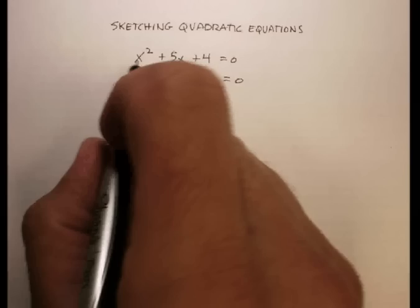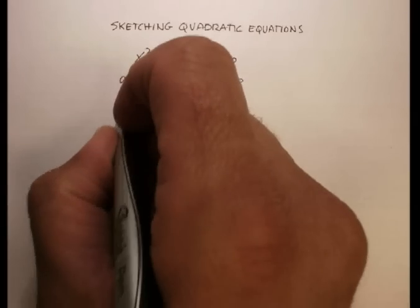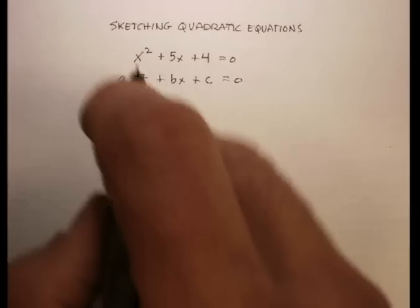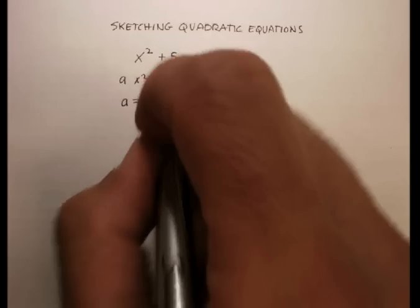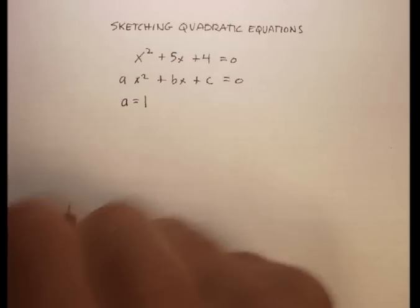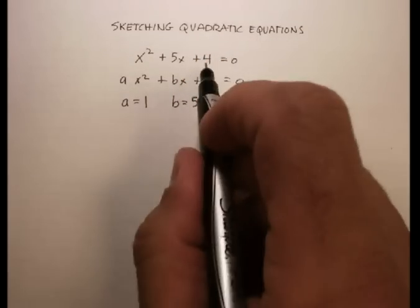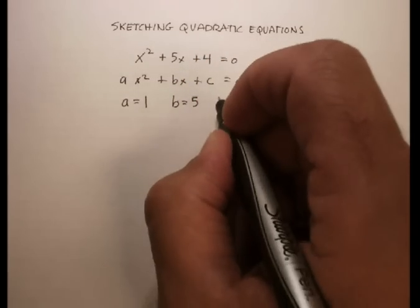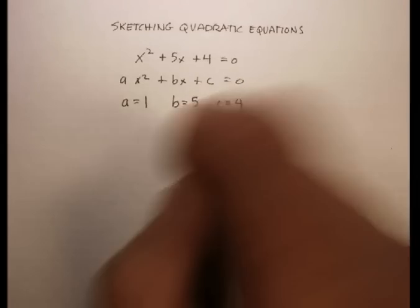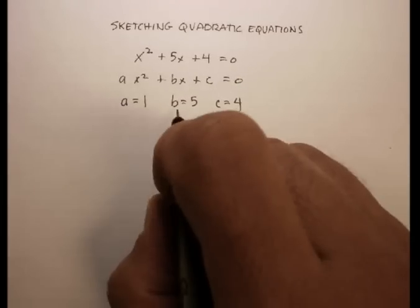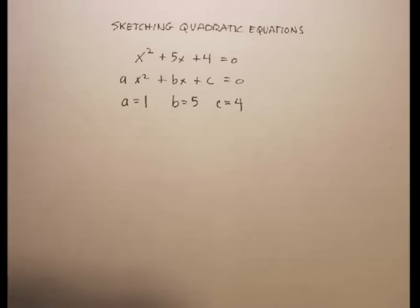In order to do this particular example, we're going to identify what the a is. The a is the number in front of the x squared. In this case, it's 1. The b is the number in front of the x. That's equal to 5. And the c is just the number or the constant. So we have our a as 1, b as 5, and c as 4.